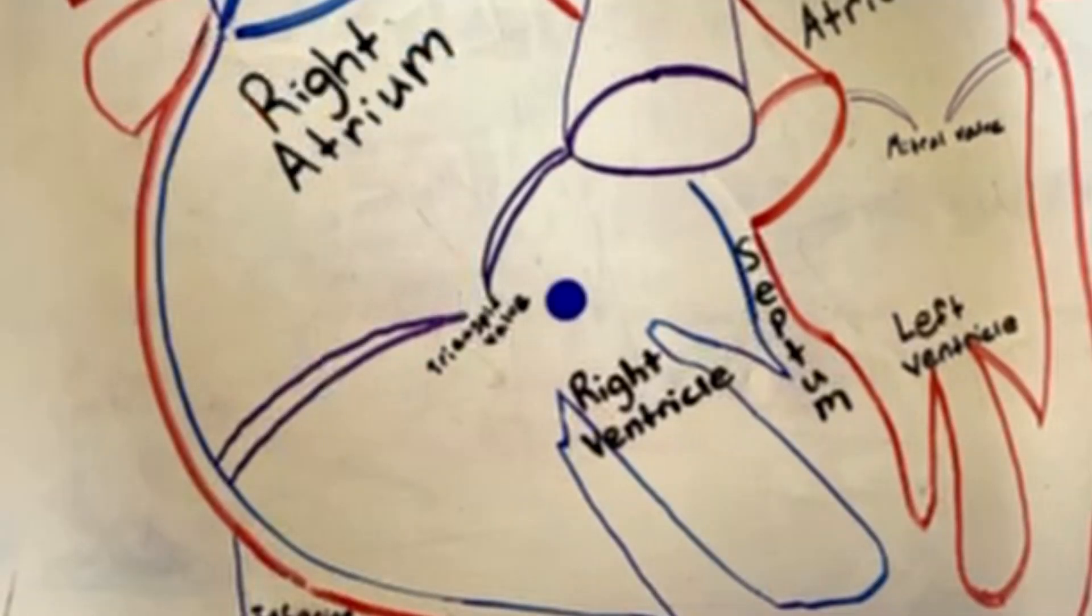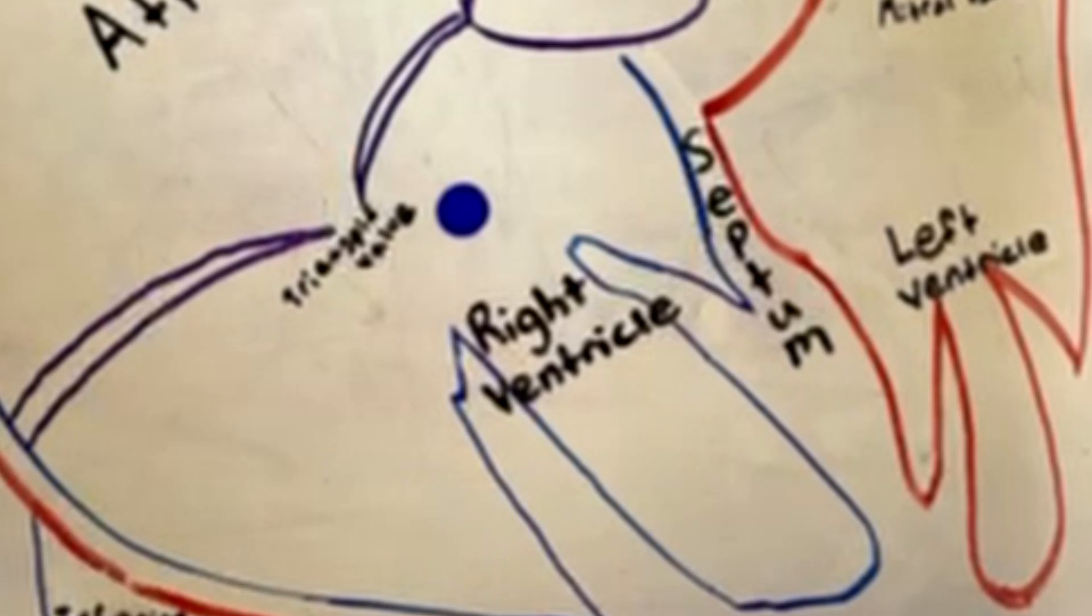And once those hooligan blood cells are kicked out, they go driving, but on the right side of the road, aka the right ventricle. Because driving on the left side of the road is just really stupid.